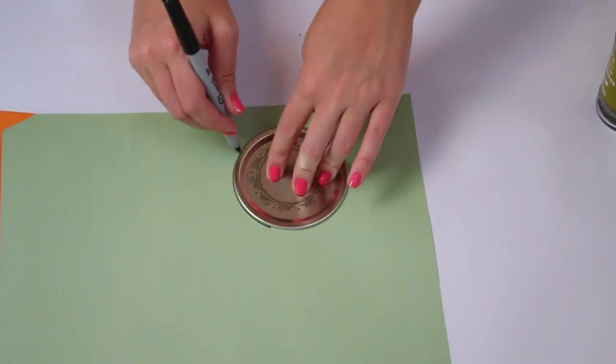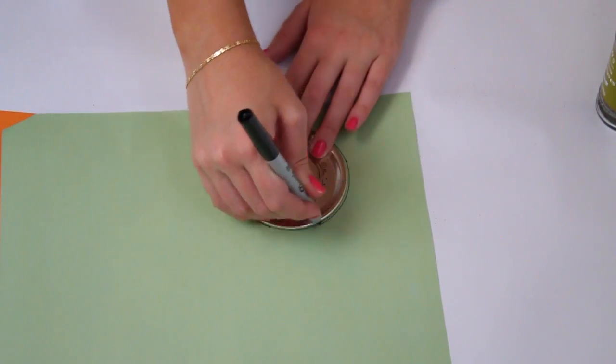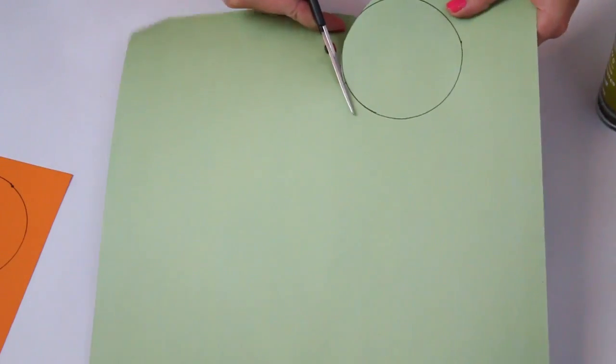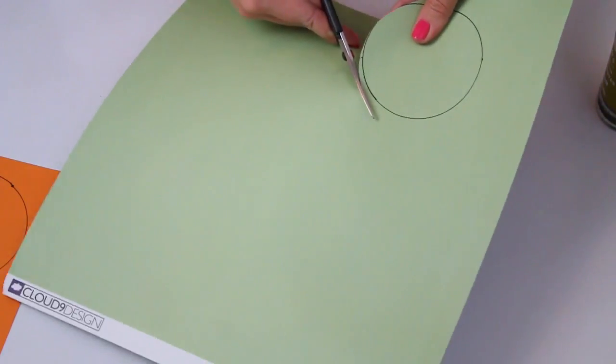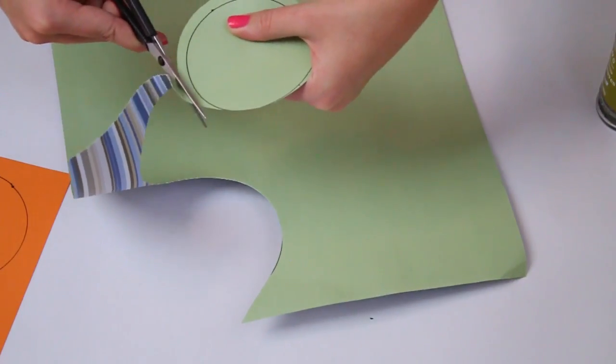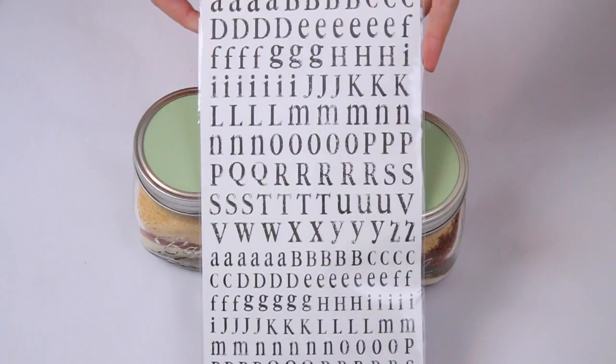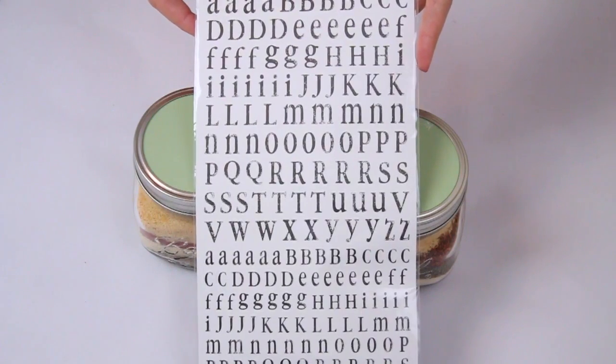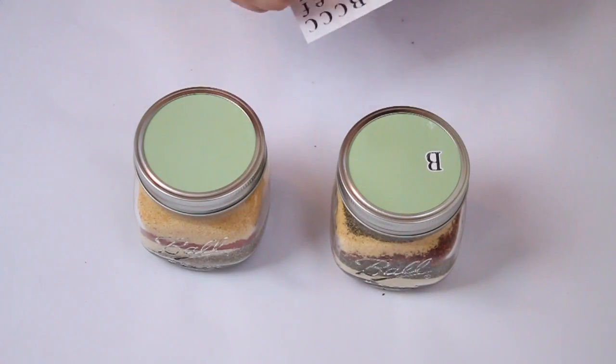So I wanted to make the lid a little bit prettier so I traced it on some construction paper. You could do this however you like with whatever colors you want and I just cut out the circle a little bit larger than the actual lid that way I made sure there was no excess. And then I just took some little stickers and wrote beef and chicken on it.